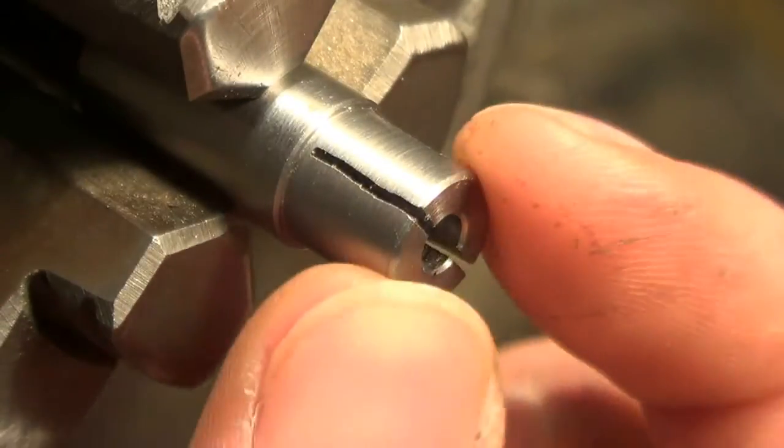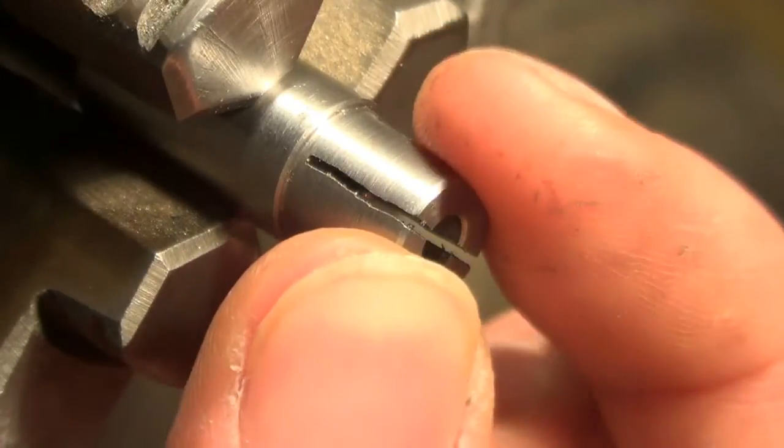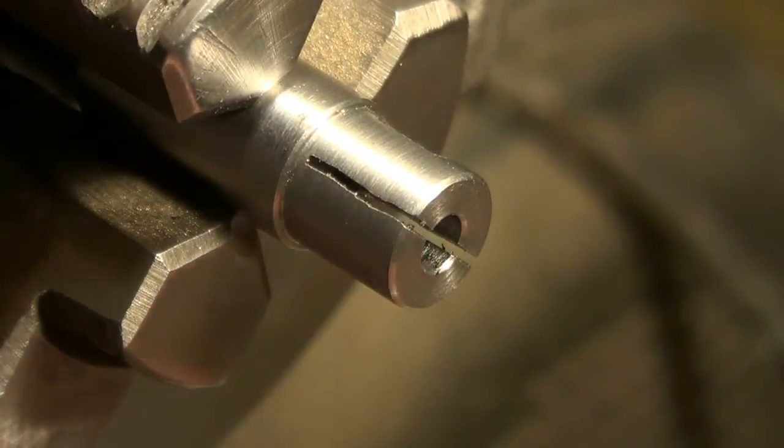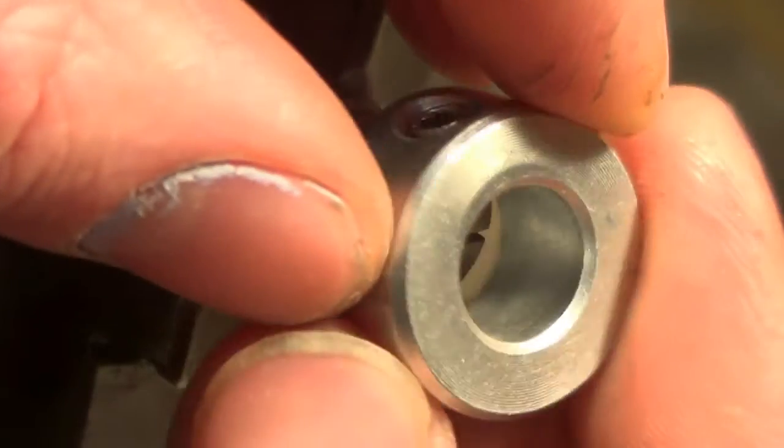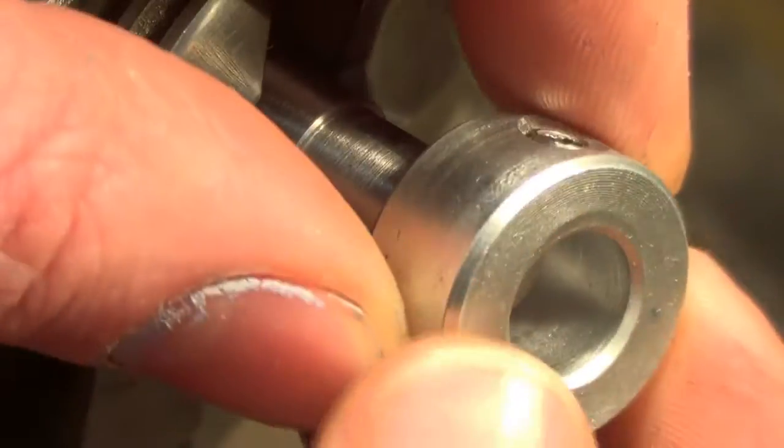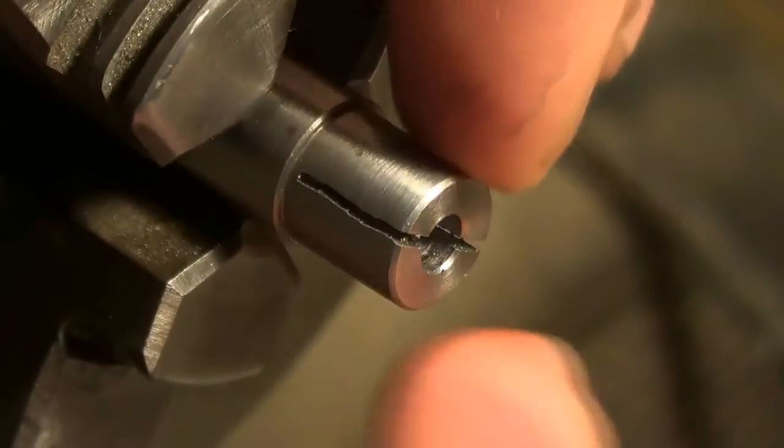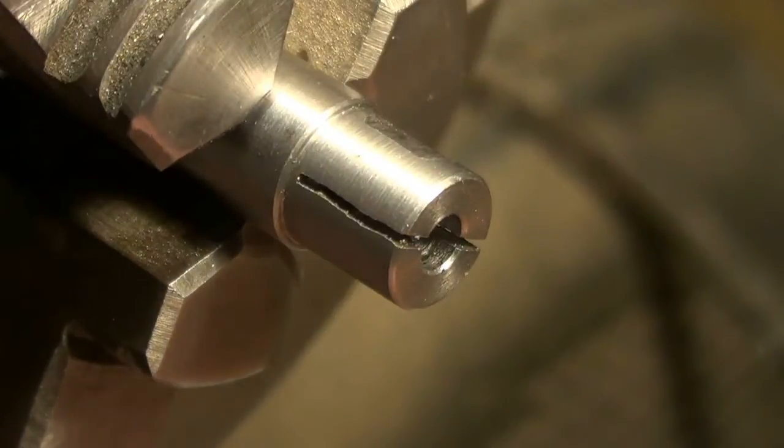These two halves spring very slightly. To clamp it, we use a shaft collar which has a grub screw. As that presses down, these two halves close and grip the work.